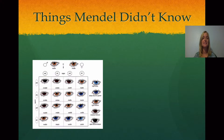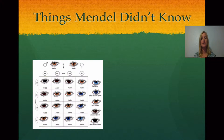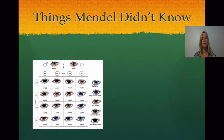Now we're going to talk about things that Mendel didn't know. Mendel worked with traits where there was one option or the other — only two possibilities. The color of the flowers was either purple or white, with no variation in between. But we know there are traits with a lot of variation, like eye color, which has many variations — not just blue, green, or brown, but a lot of variation within those. When Mendel looked at pea plants, they were either tall or short, with no medium variation in between.